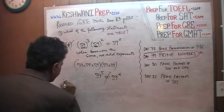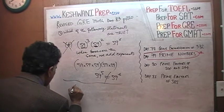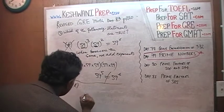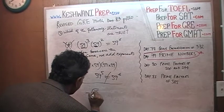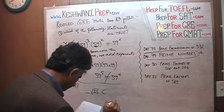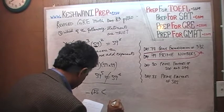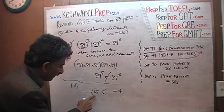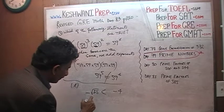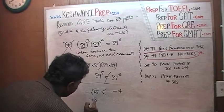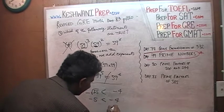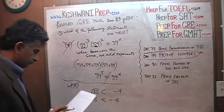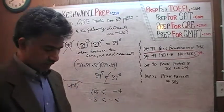Statement L says negative of the square root of 25 is less than negative 4. The negative sign is outside and does not play part in taking the square root. The square root of 25 is 5, and negative 5 is in fact less than negative 4. So that statement is true.